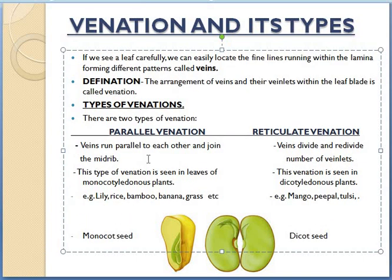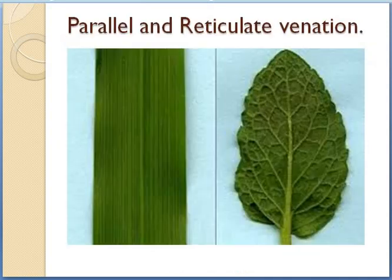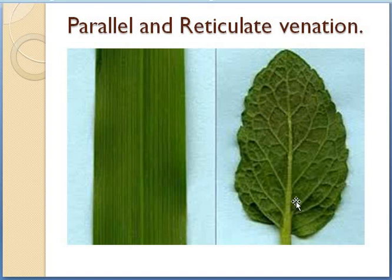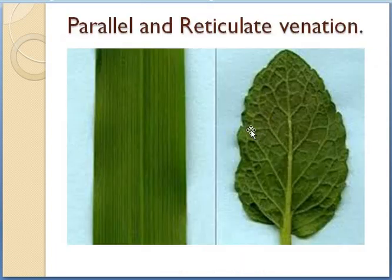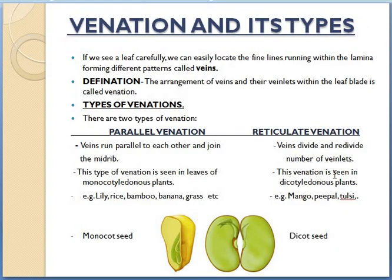Moving on to the next type of venation — reticulate venation. This second leaf which you can see here is showing reticulate venation. It means that the veins are not running parallel to each other and the veins are scattered — you can see veins going anywhere in the lamina. In reticulate venation, the veins divide and re-divide into a number of veinlets. These small, small veins are called veinlets.